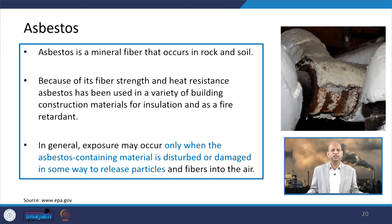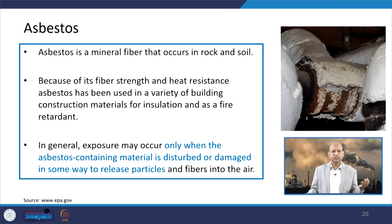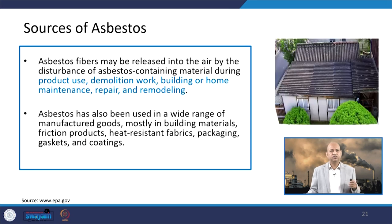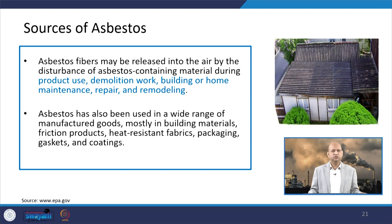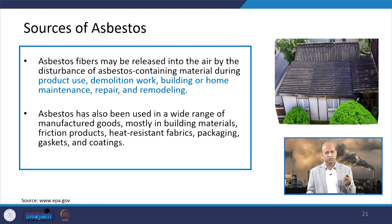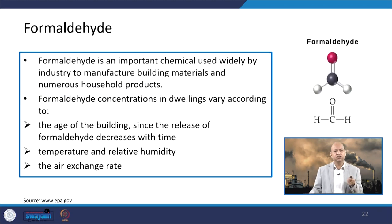Exposure to asbestos occurs when asbestos-containing material is disturbed or damaged, releasing particles into the air that can be inhaled. Sources include asbestos-containing tiles, sheets, and building materials, as well as heat-resistant fabrics, packaging, gaskets, and coatings — all of which contain asbestos that can be released.